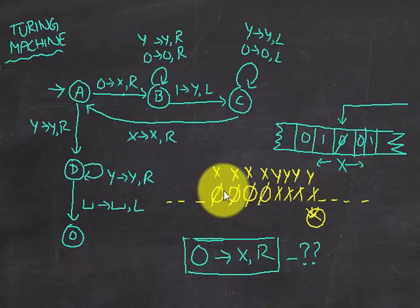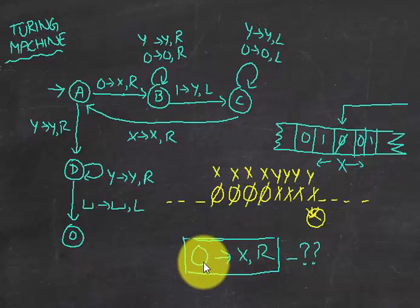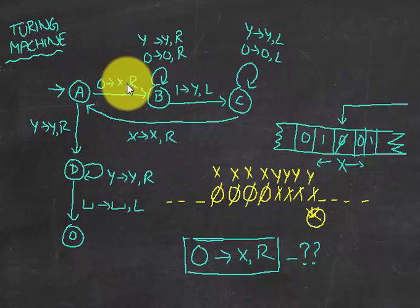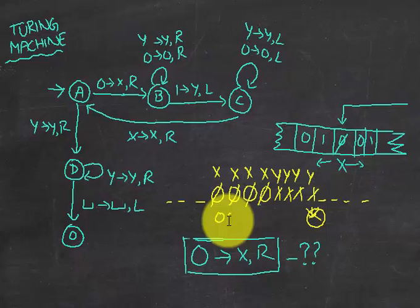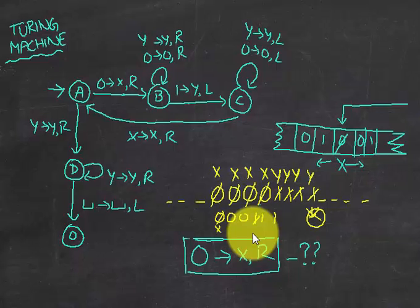Now how do we draw the state diagram? After completing the tracing it's easier. We start: whenever we see a zero we convert it to X and move to the right by one step. The notation means whenever you see a zero you convert it to X and move right — always by one step, never many. After that, we ignore zeros, ignore Y's which come later, and when we see a one we convert that to Y and move left.